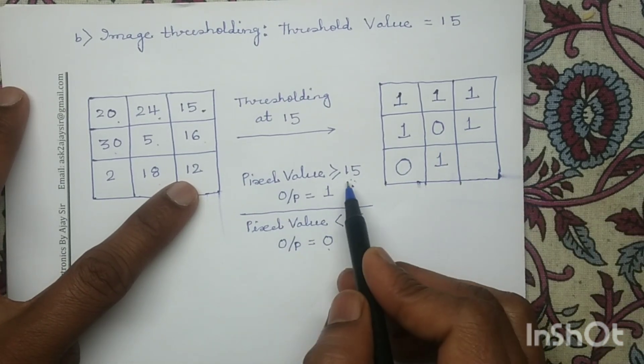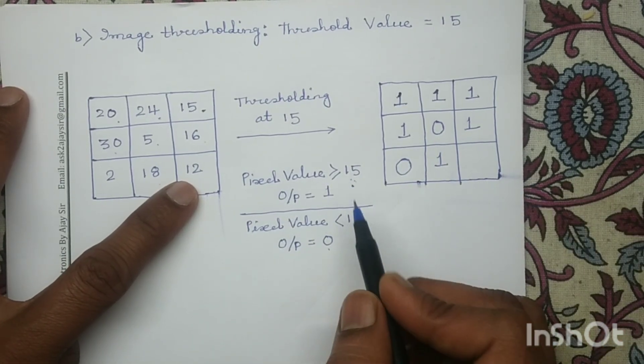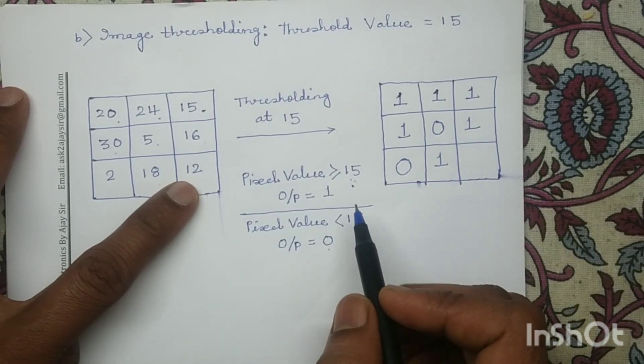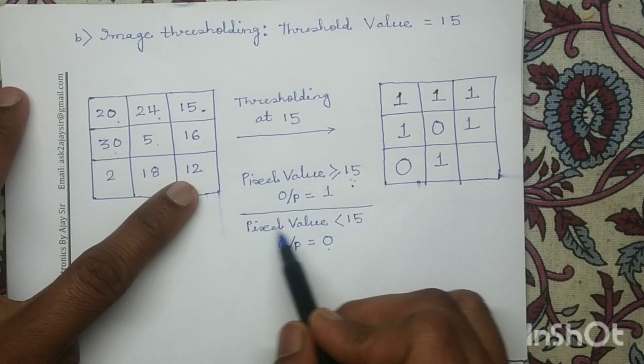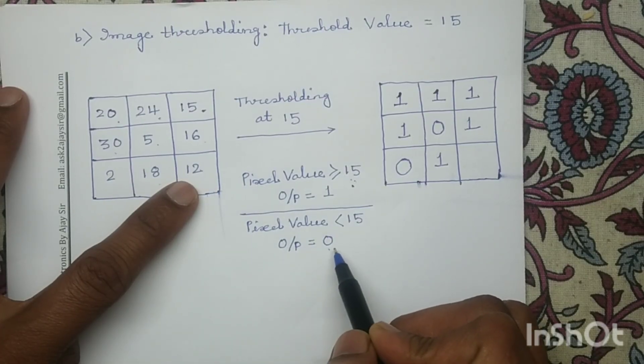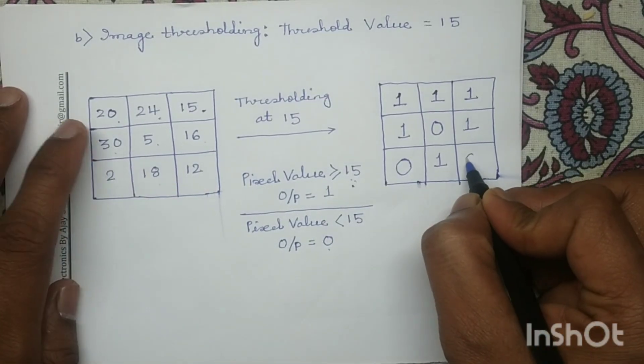For pixel value 12, it does not satisfy the condition — greater than or equal to 15 — since 12 is less than 15, so in the output image I write 0.